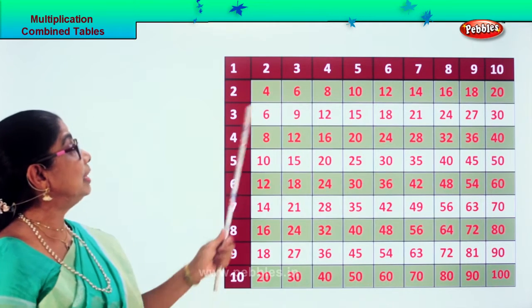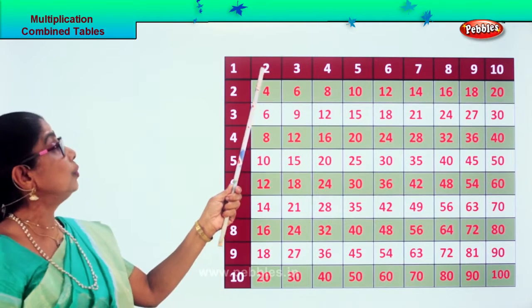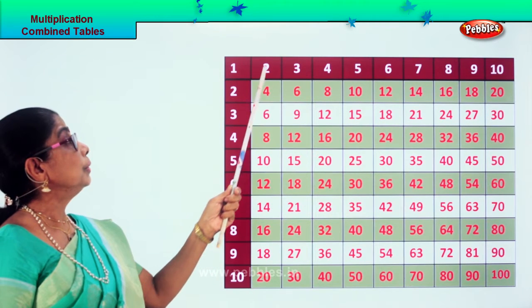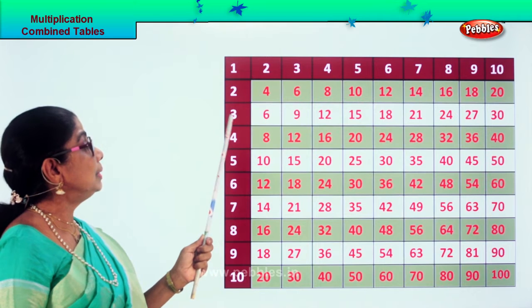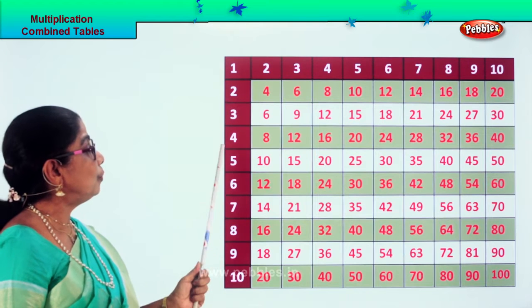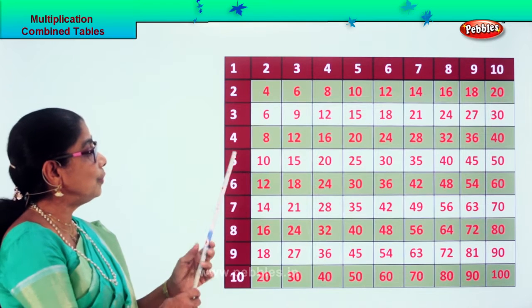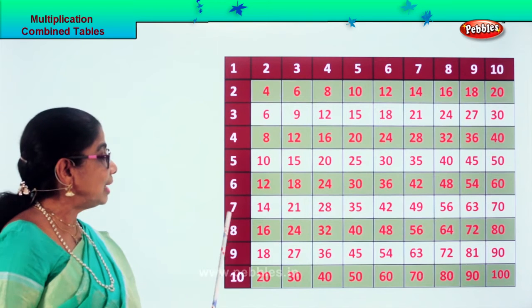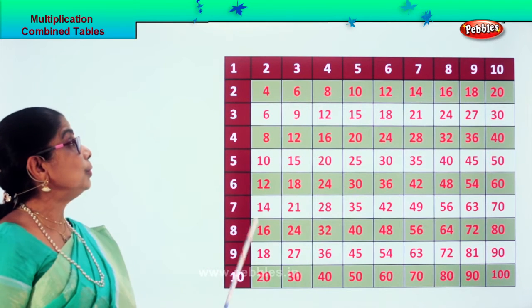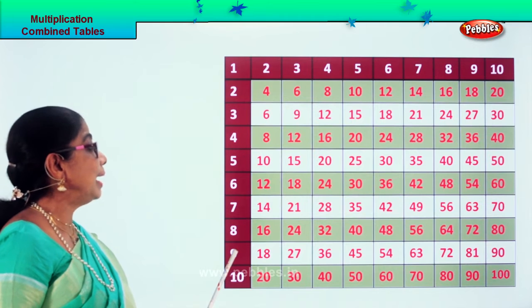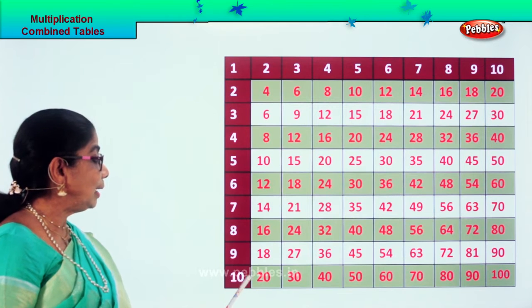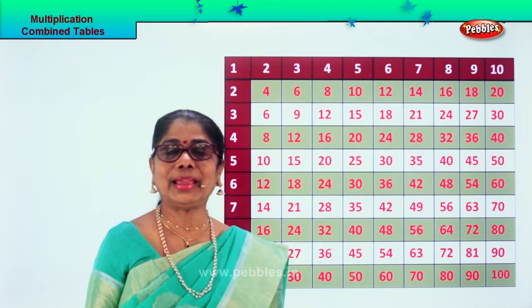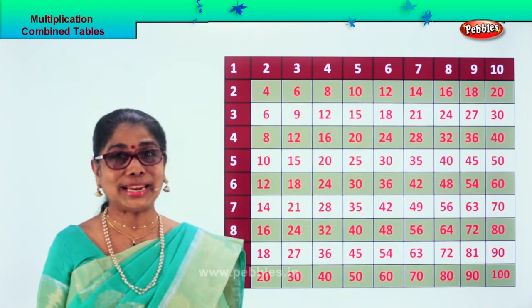Now you can say this way also: two ones are two, two twos are four, two threes are six, two fours are eight, two fives are ten, two sixes are twelve, two sevens are fourteen, two eights are sixteen, two nines are eighteen, two tens are twenty. This way or this way — okay? You get the two times table.